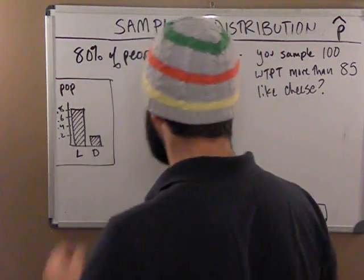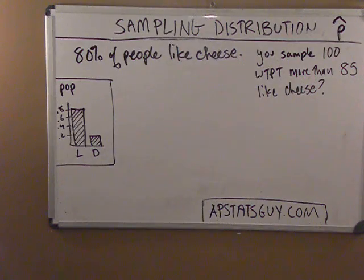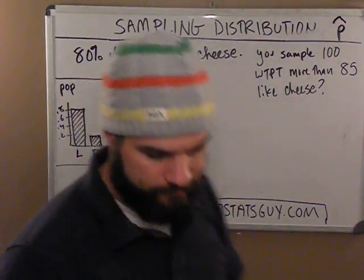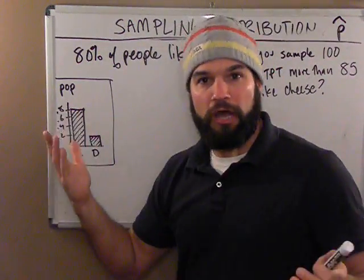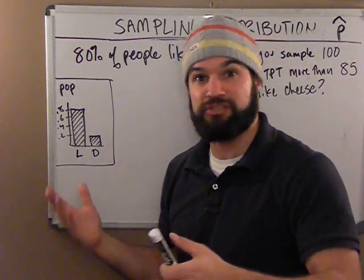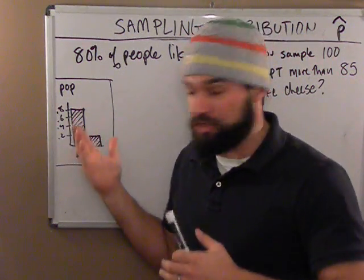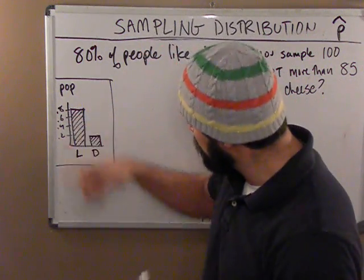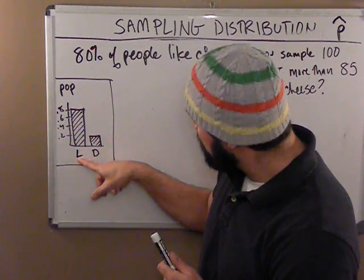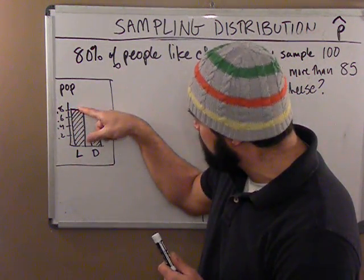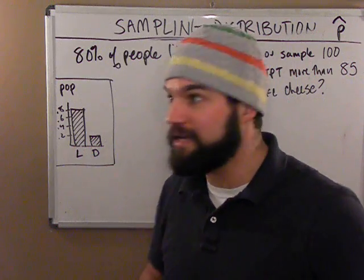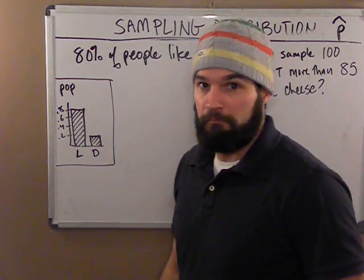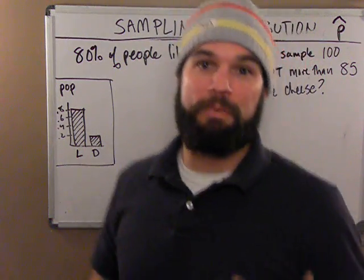But just the process is what's important. Here's the problem: 80% of people like cheese. You sample 100 — what's the probability more than 85 like cheese? So the population looks something like this. I can't draw a histogram of the population because this is categorical data, so I draw a bar chart — a frequency bar chart. 80% of the people like cheese, 20% don't. The distribution of the population is a bar chart, and the distribution of any of my samples will also be a bar chart.